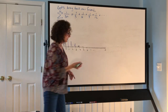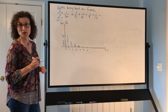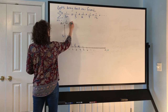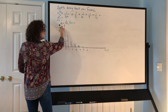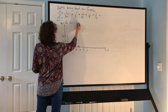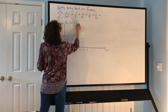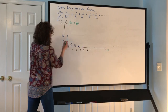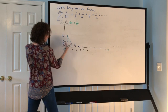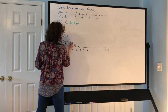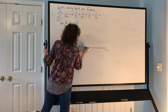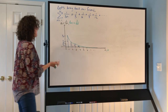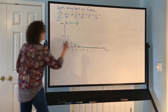Instead of a_n, we graph f(x) = 1/(3x) on the interval from 1 to infinity. This continuous function passes through each one of our discrete points. So that's the graph of our continuous function f(x) = 1/(3x) on 1 to infinity.